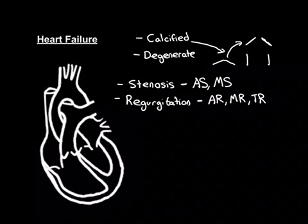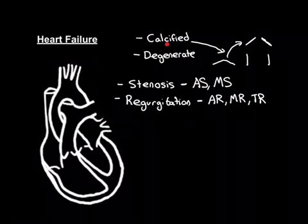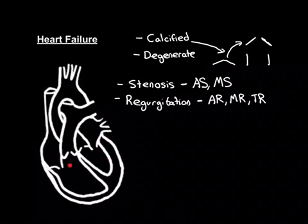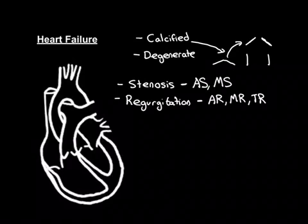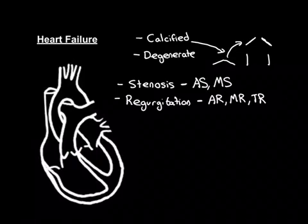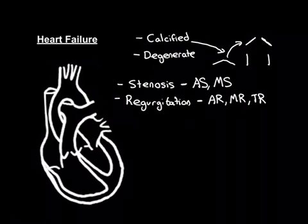Why is it the aortic and mitral valves that get calcified rather than the right-sided valves? It's thought that one of the major risk factors for valve calcification is high pressures, and the pressures are naturally much higher in the left heart than the right heart. In particular, essential hypertension is a risk factor for aortic stenosis, since higher pressure promotes calcification of the aortic valve.